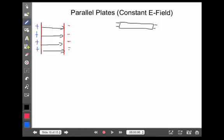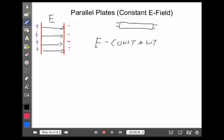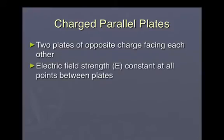The most important part about this: around any charge, the electric field strength gets weaker and weaker with distance. However, with parallel plates, the electric field strength between the plates is constant — in other words, it maintains the same value everywhere between the plates. That's the first important concept about charged parallel plates: the electric field strength is constant at all points between the plates.